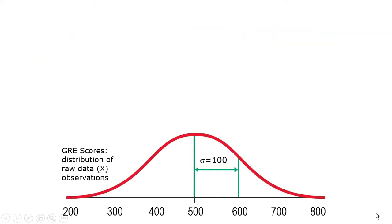Here's a situation we talked about a little while ago, slightly modified. Here's the population of all possible GRE scores. They have a mean of 500 and a standard deviation of 100 — at least in the old school system they did.